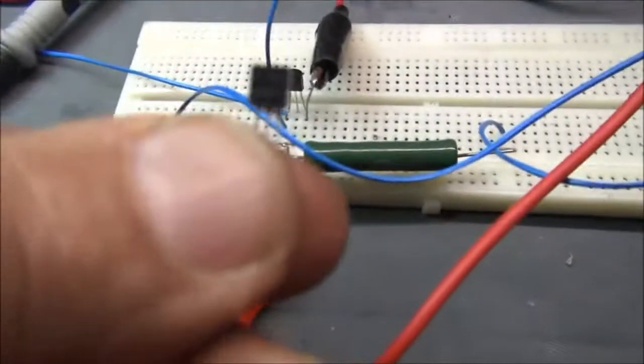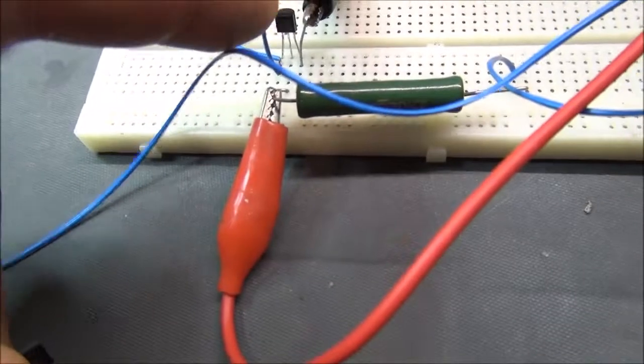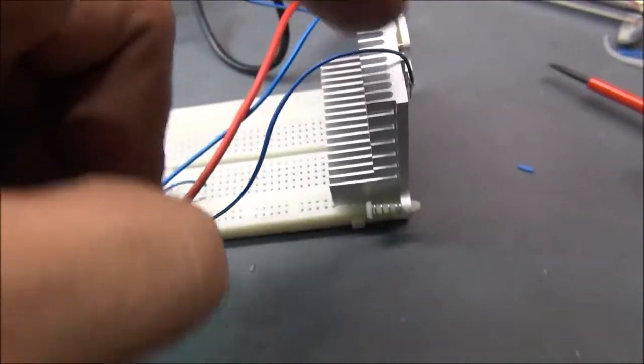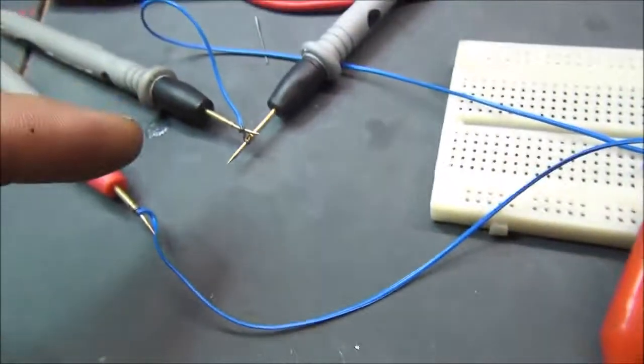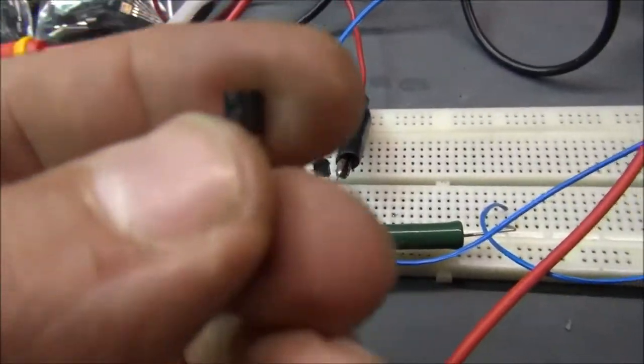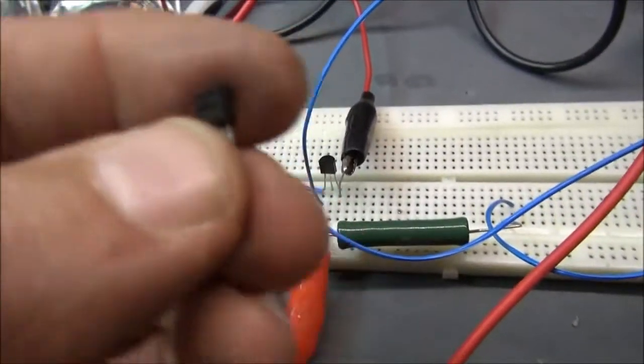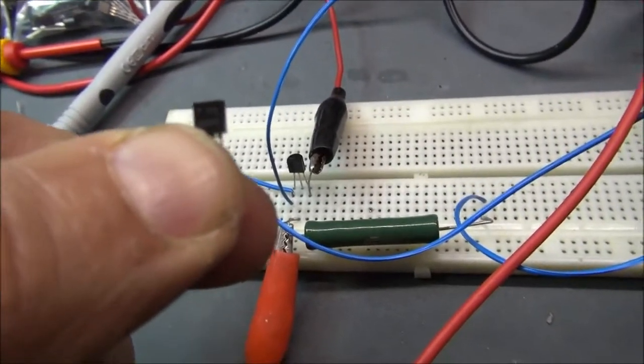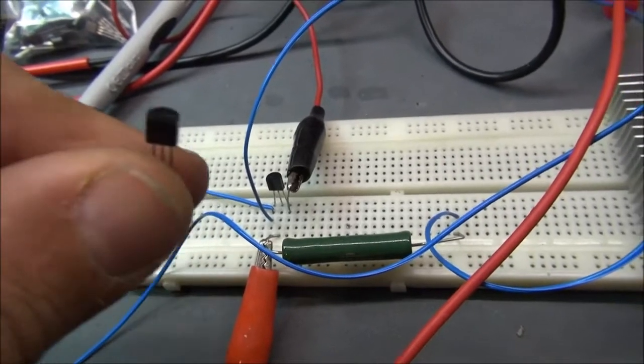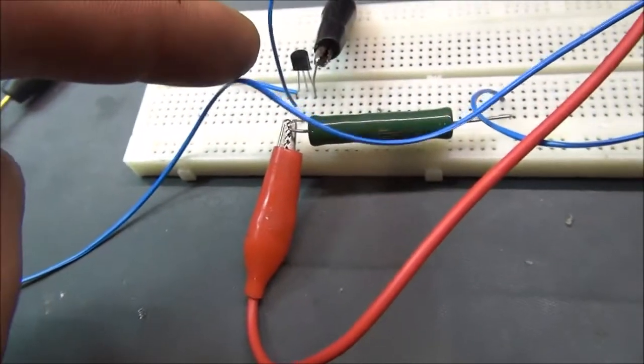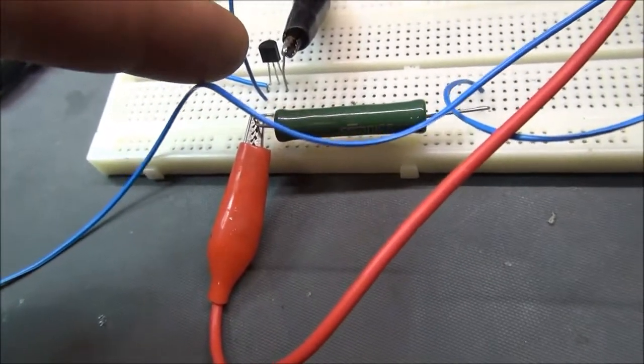Now we are going to dismount this one, invert the current for the diode here and invert the power supply, and make this one to test the opposite of this transistor which is the PNP version, and see if it works nice like this one.